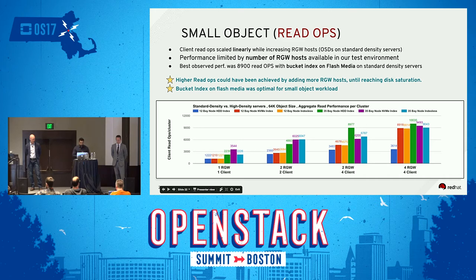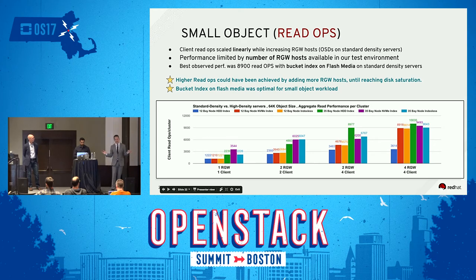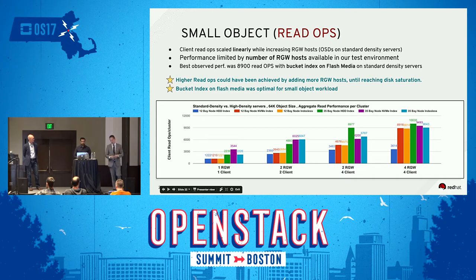Bucket index on flash media was optimal for small object workloads. We saw similar performance with indexes on SSD as when we completely disabled the indexes. There is actually a way in RGW to make it so that you can't list objects at all — it's just blind. You insert a key and if you read that key you get the object, but you can't list objects in a directory. That's useful for many applications, but you can get just as good performance without losing that listing functionality.